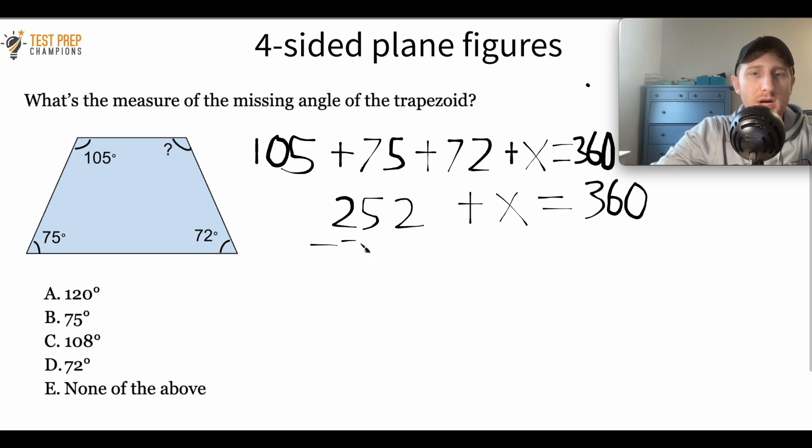And now what I'm going to do is I'm going to subtract 252 from both sides. Now, the reason I'm doing this is because I've got positive 252. If I subtract 252 from that, these will cancel out, leaving me with just X. And whatever I do to one side, I also have to do it to the other side as well. And so if I do that, I'll see that the answer is 108 degrees.